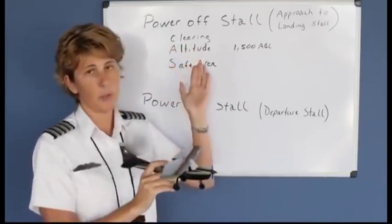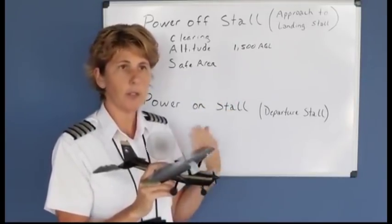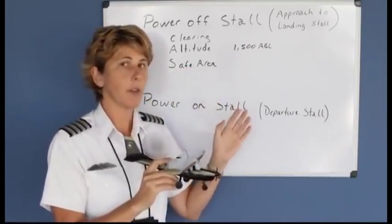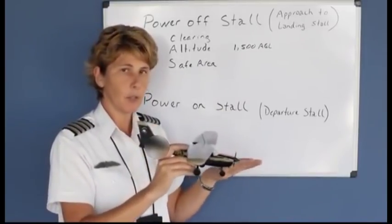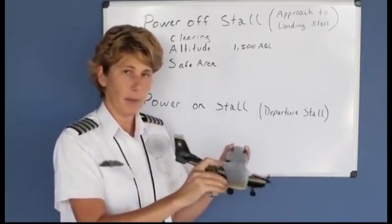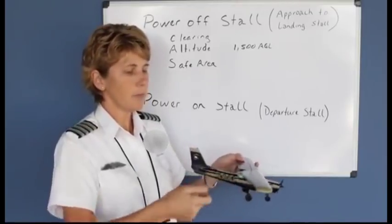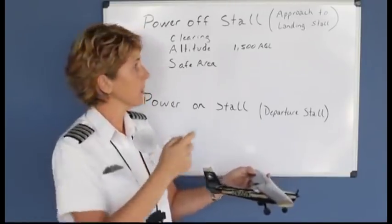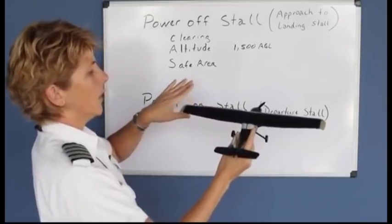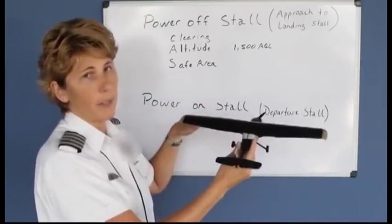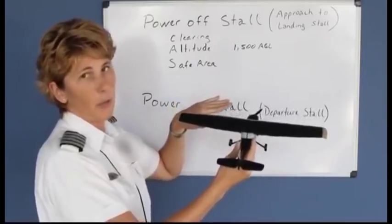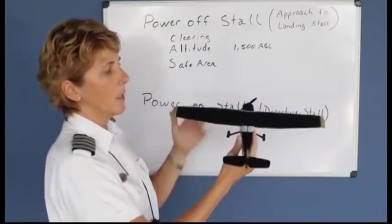Sometimes the examiner will ask you to perform the power off stall after you're already set up for slow flight, just to make the checkride progress more quickly. But if asked to perform the power off stall fresh, set it up in landing configuration—full flaps and gear down if applicable—in a descent at a slow airspeed. To perform the actual stall, take the throttle all the way to the off position. Then pitch the airplane up to where it is impossible for it to continue to fly. You don't need to pull way up toward the sky—just basically maintain your altitude or keep the nose slightly above the horizon until the airplane stalls.